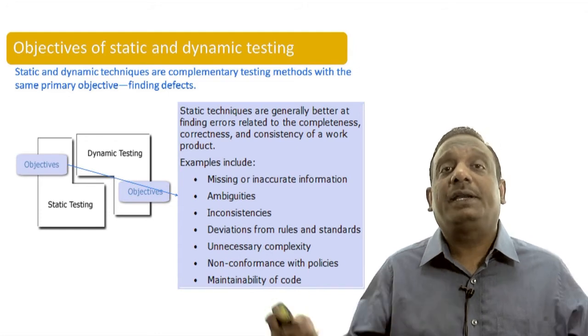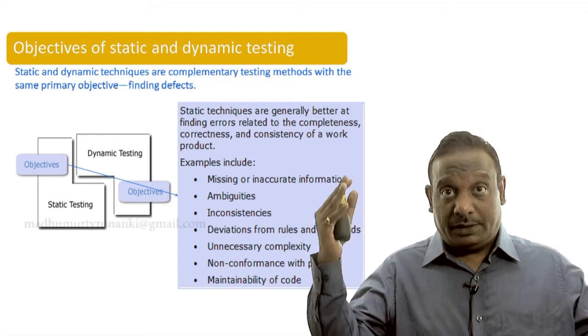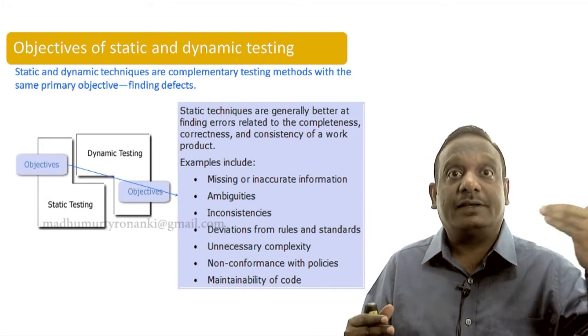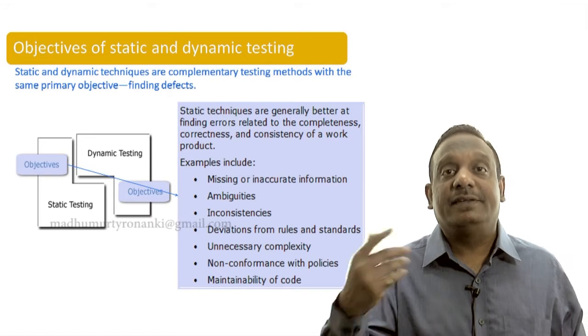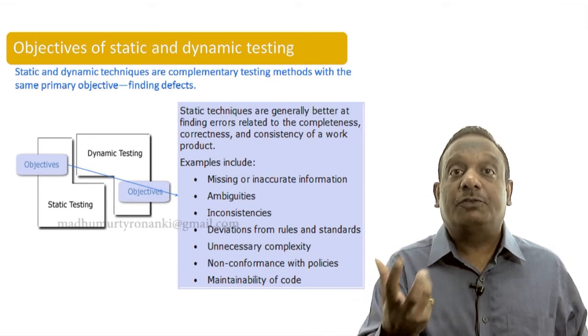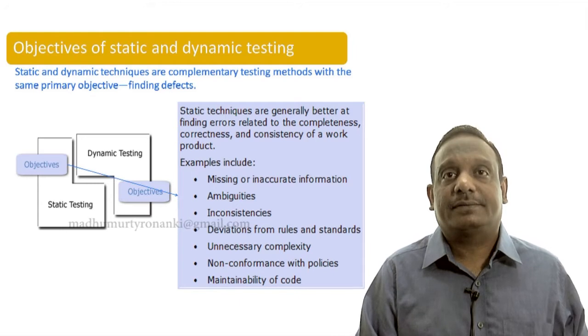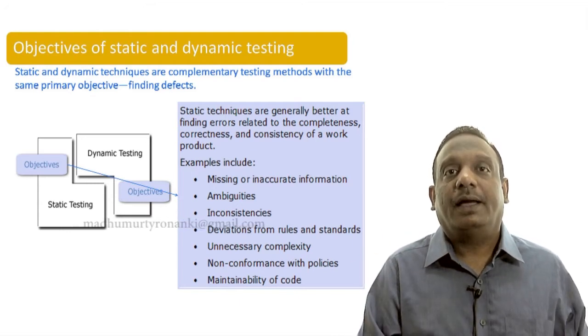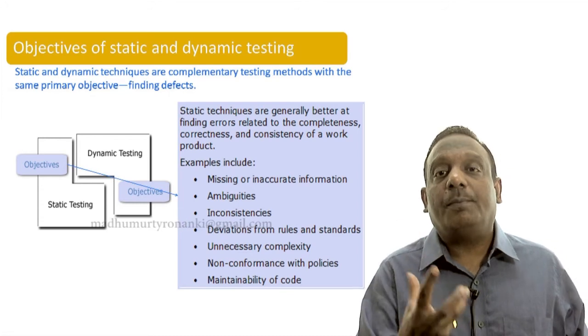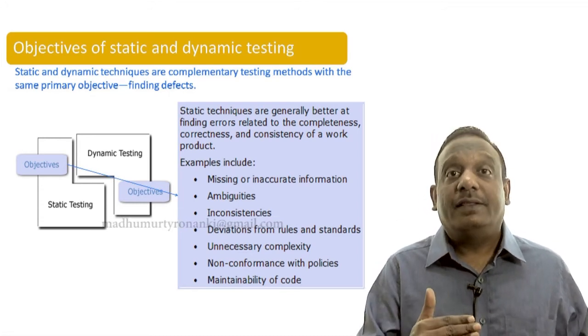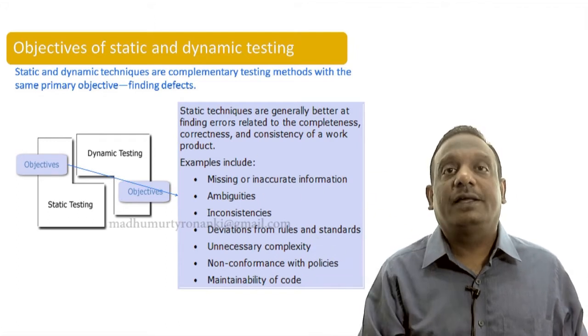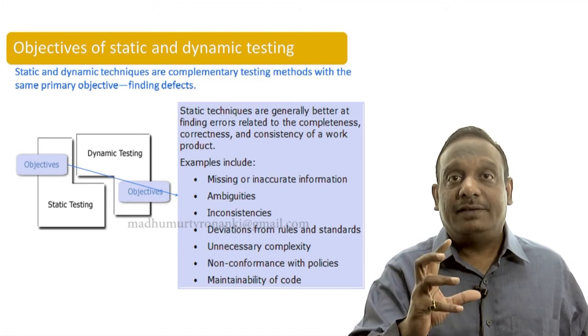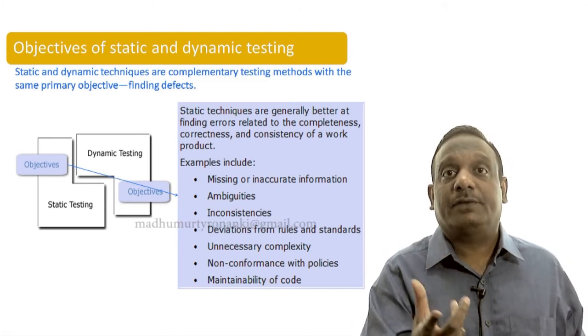Unnecessary complexity. A program can be written in multiple ways. A very senior programmer writes the program with less complexity so that others can understand. Debugging is easy. And sometimes inexperienced programmers make it very complex. The control flow design will be very poor. And that is what we call complexity of code. Whenever the complexity of the code increases, the testability of the code decreases.